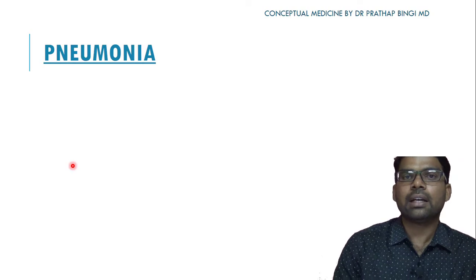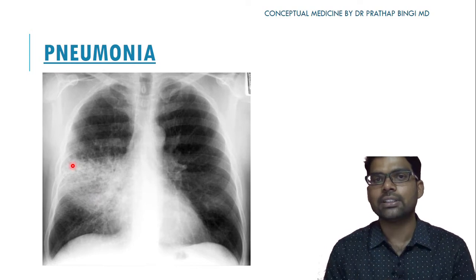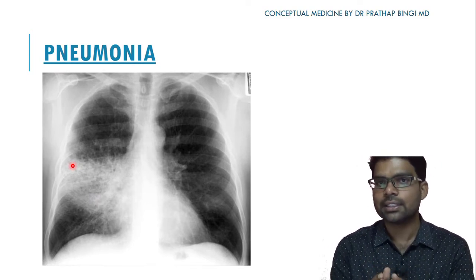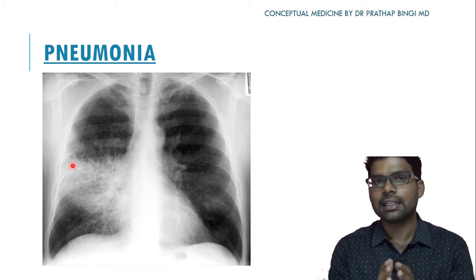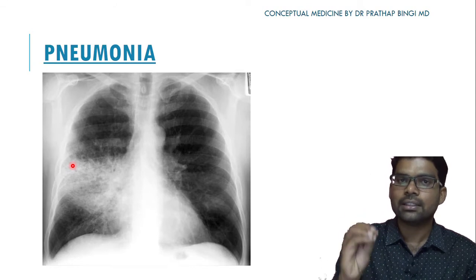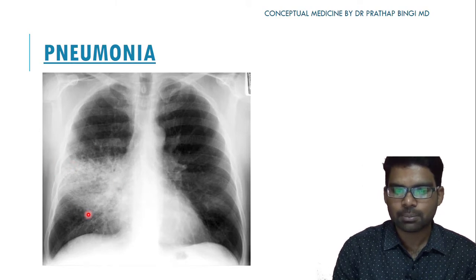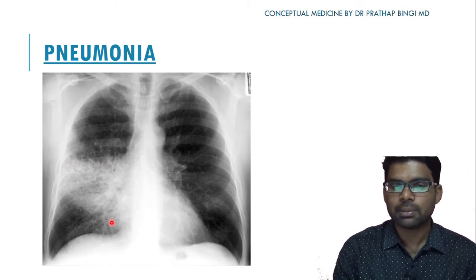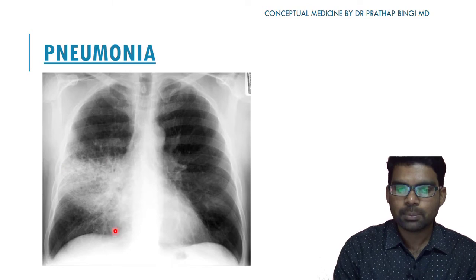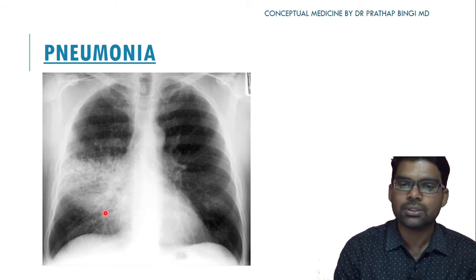The next condition is pneumonia. On X-ray, pneumonia shows classical consolidation features. The hallmark of consolidation is the air bronchogram pattern. Here you can see a mid-zone, wedge-shaped or rectangular opacity with an air bronchogram pattern, suggestive of right mid-zone pneumonia or consolidation.